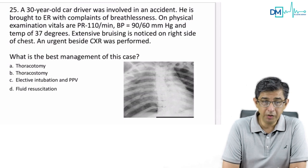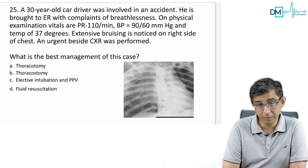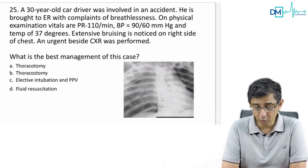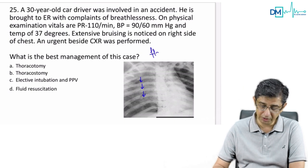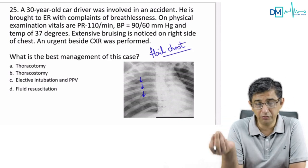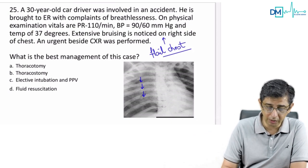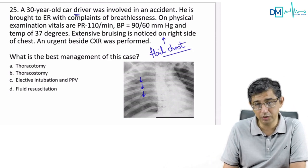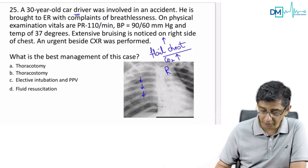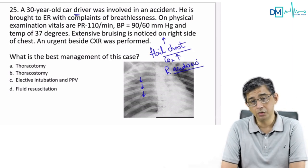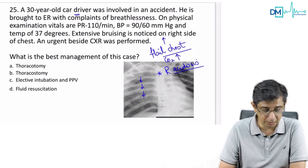A car driver involved in an accident arrives at the ER with breathlessness, tachycardia, low BP, and extensive bruising on the chest. The X-ray shows multiple rib fractures — this is flail chest. The best management is positive pressure ventilation. Flail chest causes hypoventilation, leading to carbon dioxide accumulation, respiratory acidosis, and death. You need to intubate and place the patient on positive pressure ventilation to kick out the CO2. Answer: option C.